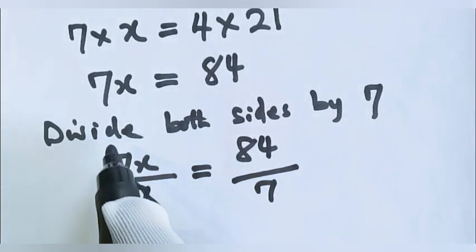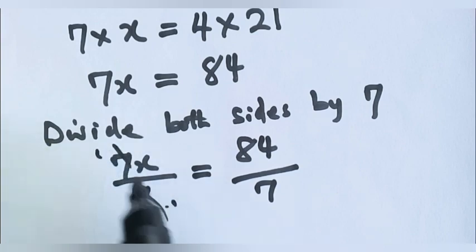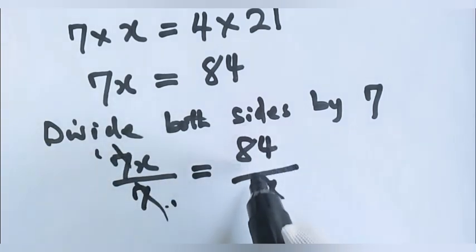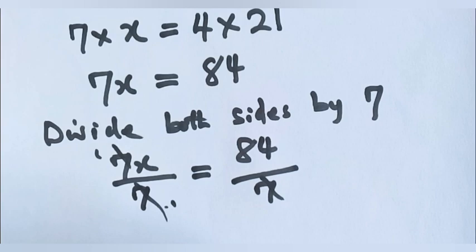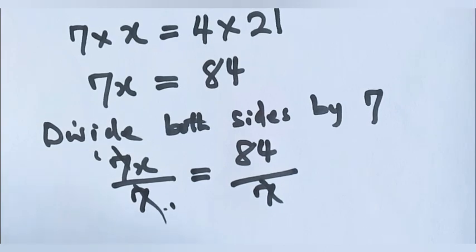When 7 into 7 is 1. 7 divides 84. What do you have? You have 12.